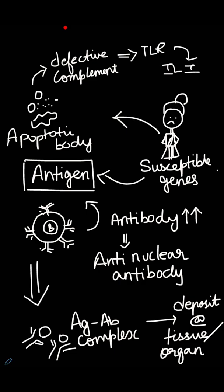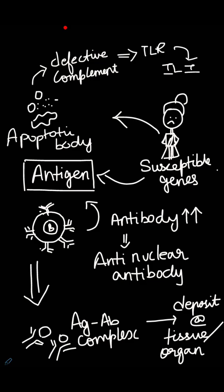The apoptotic body forms in SLE's susceptible individual with a susceptible immune system. The apoptotic contents produce an antigen. Against this antigen, an antibody is produced. In the defective complement system, these antigens are sensed by toll-like receptors. Through this toll-like receptor and the B-cell system, an antibody is produced. Specifically, it is an anti-nuclear antibody (ANA). The antigen and antibody produced form an antigen-antibody complex, which deposits at the tissue and organ level, forming inflammation and inflammatory responses.